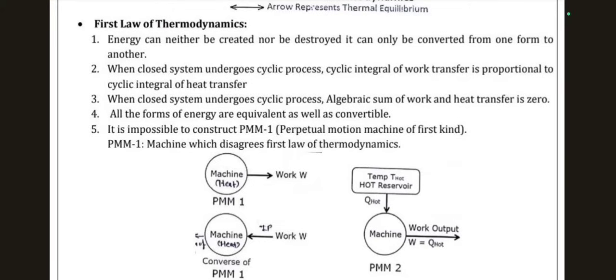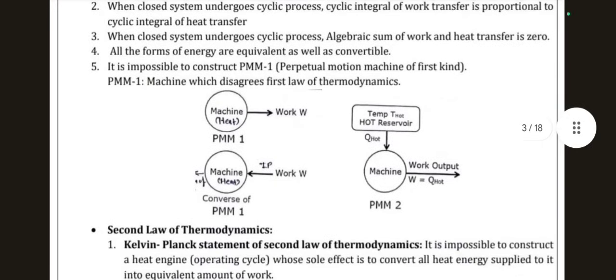The second point: when a closed system undergoes a cyclic process, the cyclic integral of work transfer is proportional to the cyclic integral of heat transfer — mathematically, the cyclic integral of dW is proportional to the cyclic integral of dQ. The third point: when a closed system undergoes a cyclic process, the algebraic sum of work and heat transfer is zero.